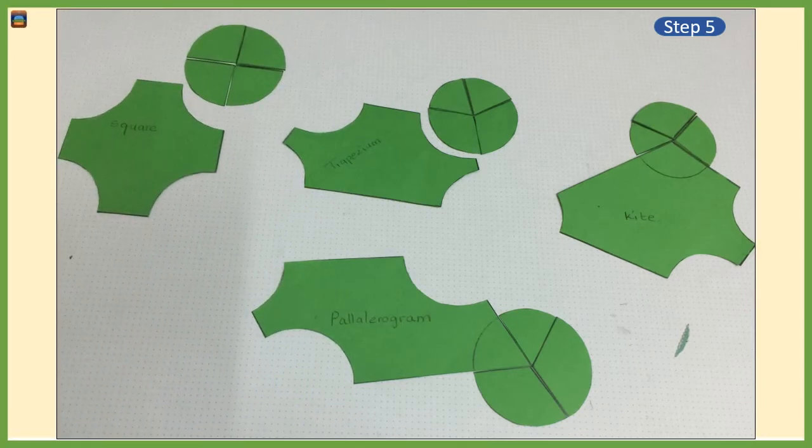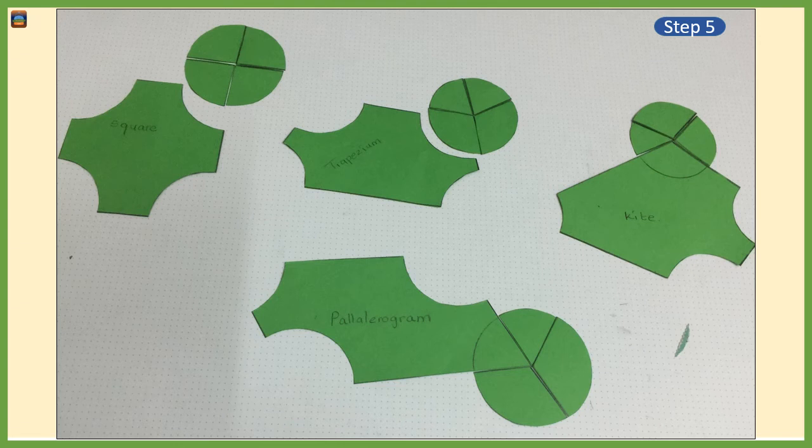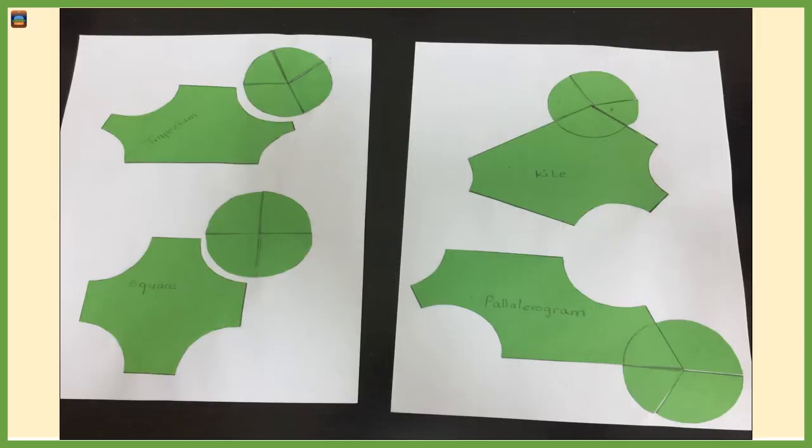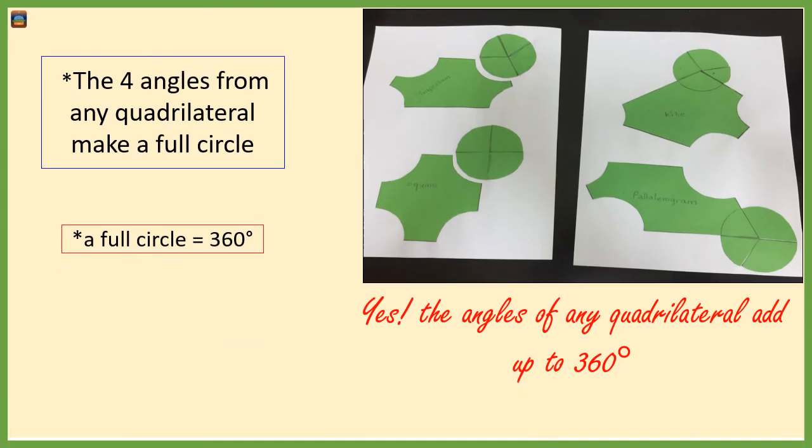Step number five, which is the last step: you have to repeat step number three and step number four with the square, the parallelogram, and the kite. You will see four beautiful circles. So any quadrilateral has four angles that sum up to 360 degrees.